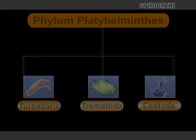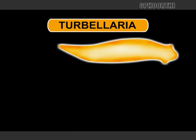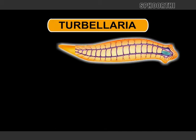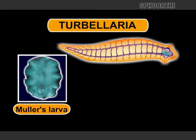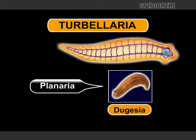Class Turbellaria: These are unsegmented, free-living animals. Muller's larva is seen during development. Example: Dugesia, that is planaria.